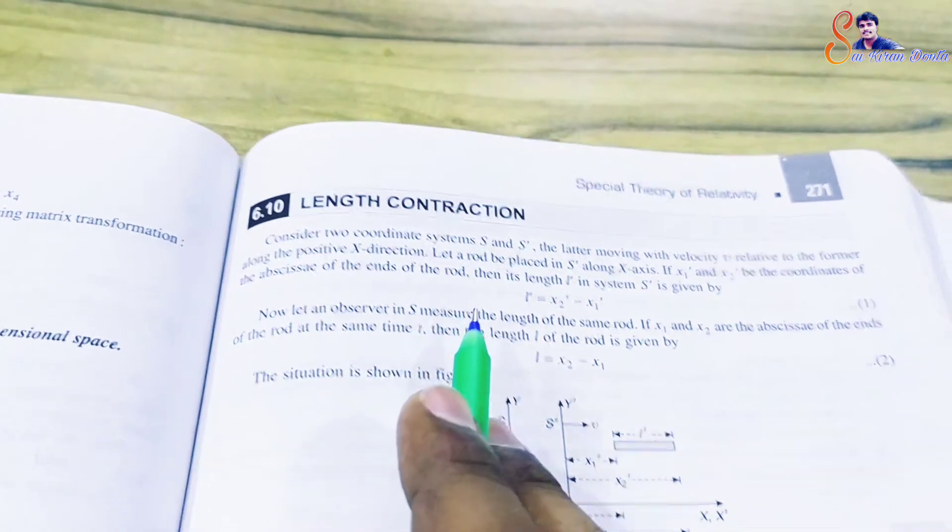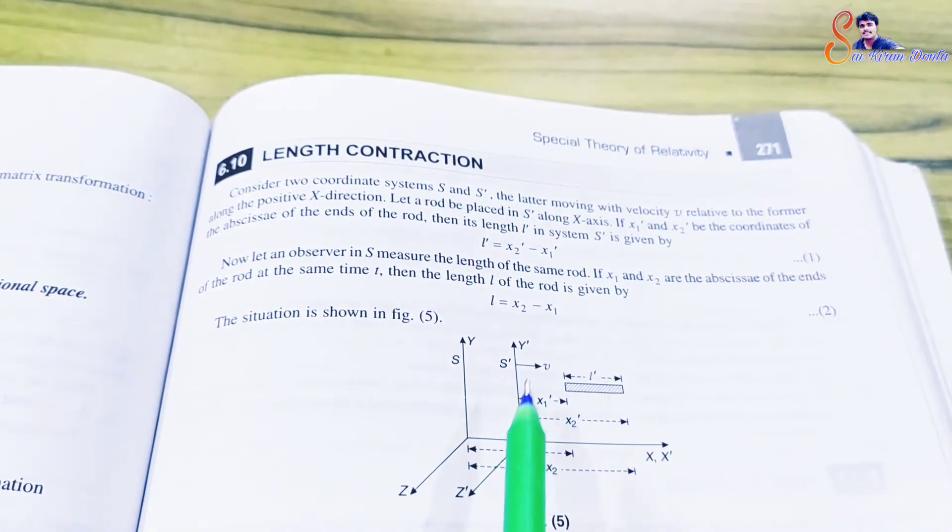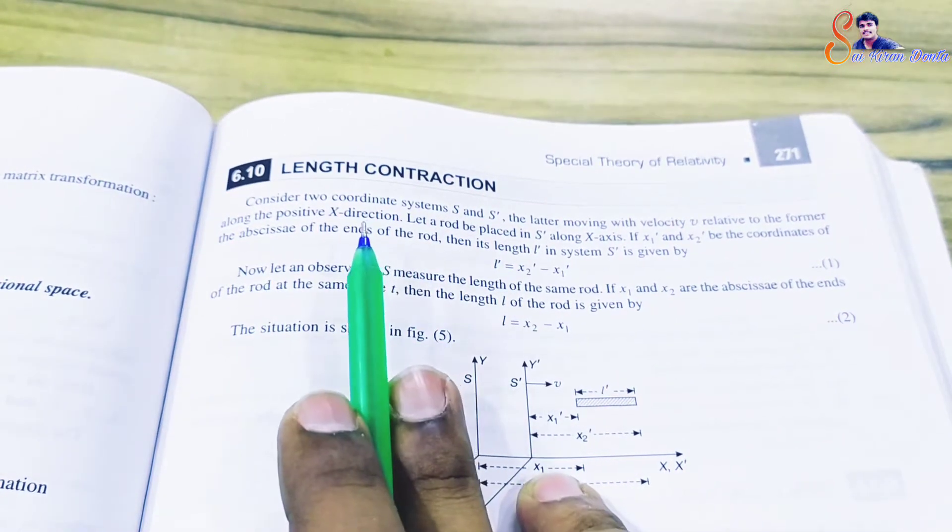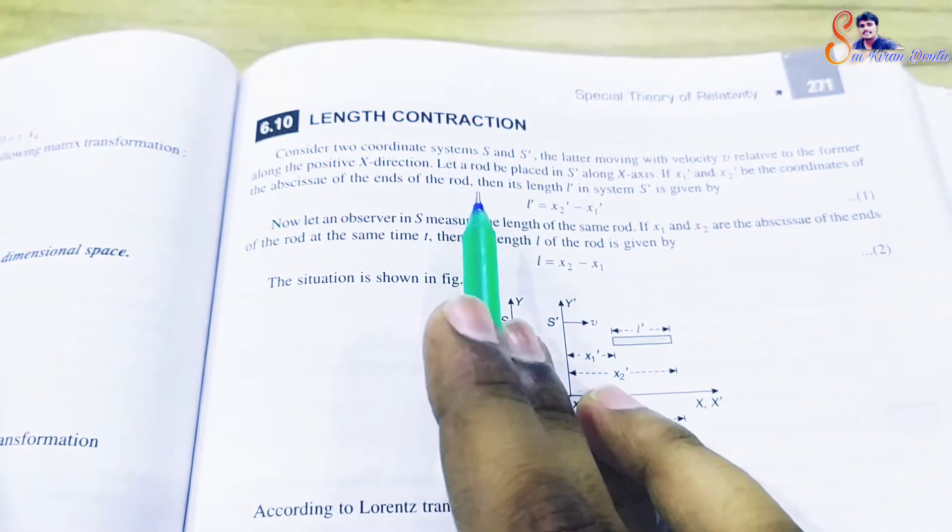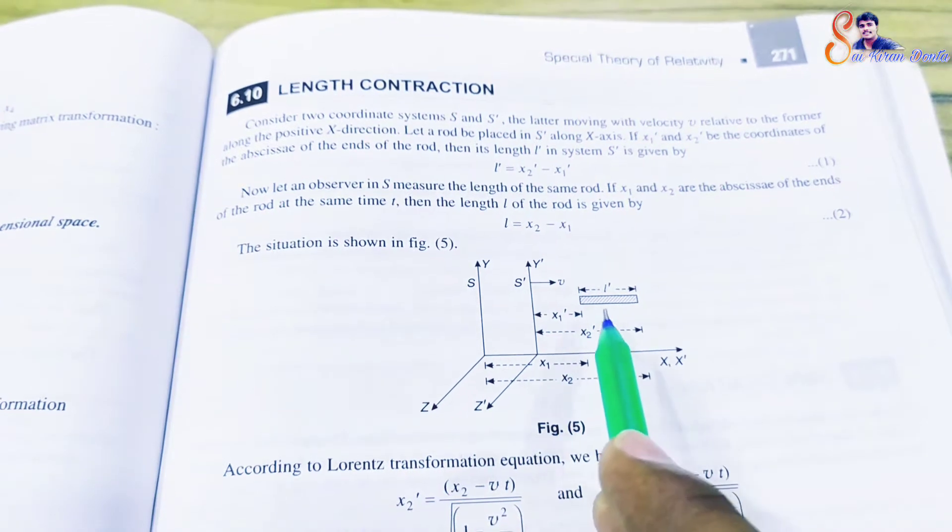Consider two coordinate systems S and S dash, the latter moving with velocity v relative to the former along the positive x direction.